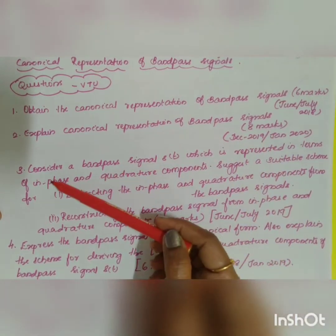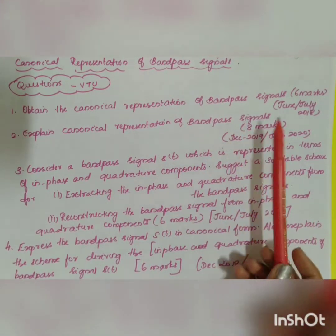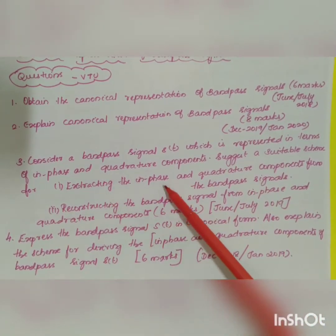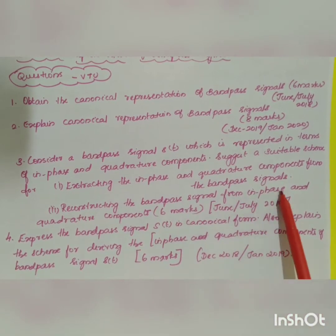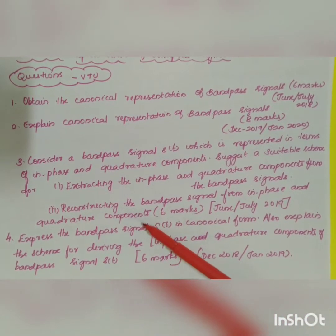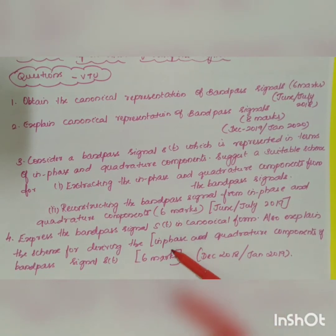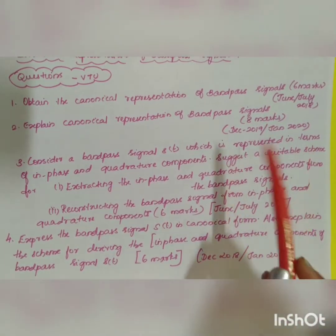The third question: consider a bandpass signal s(t) represented in terms of in-phase and quadrature components — suggest a suitable scheme for extracting the in-phase and quadrature components from the bandpass signal and reconstructing the bandpass signal from those components, asked for six marks. The fourth question: express the bandpass signal s(t) in canonical form and explain the scheme for deriving the in-phase and quadrature components of s(t), asked for six marks.